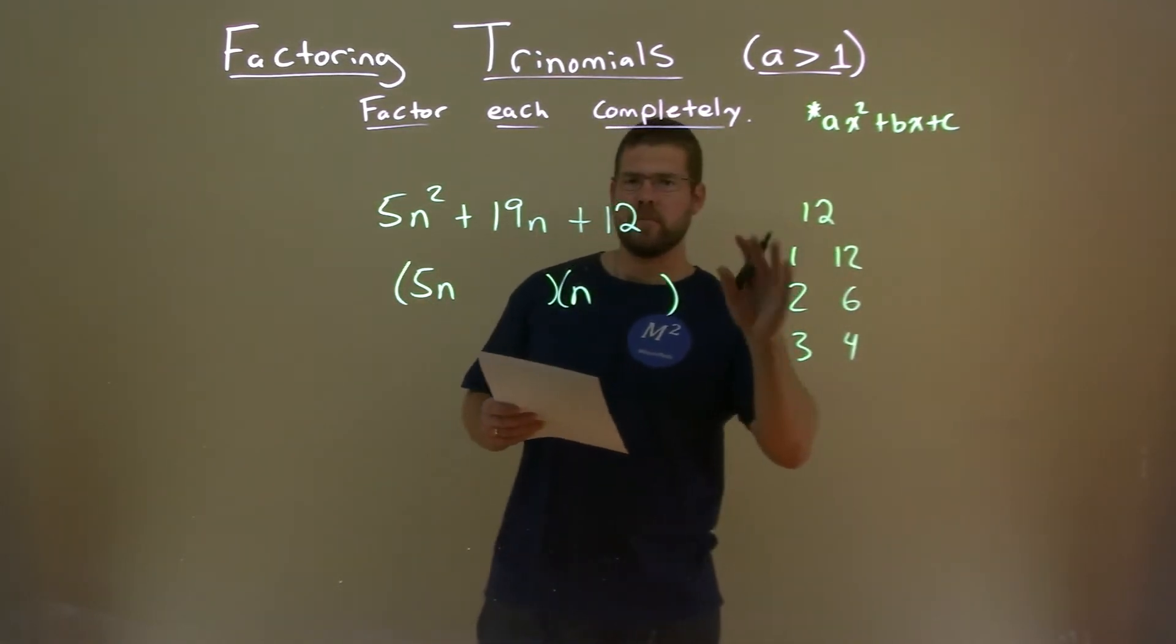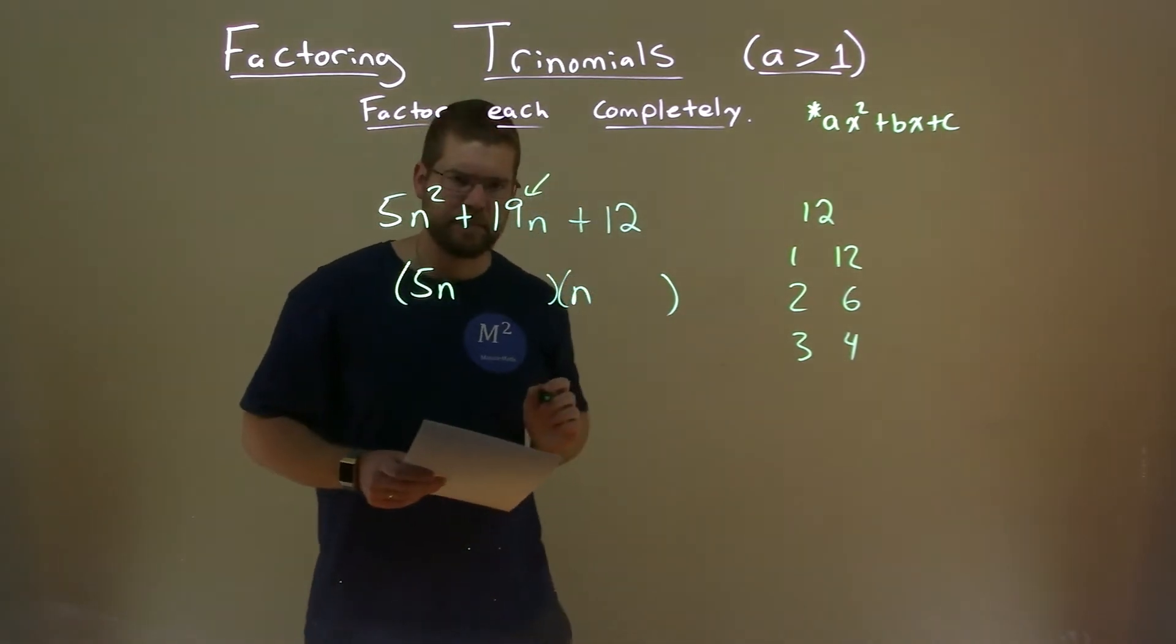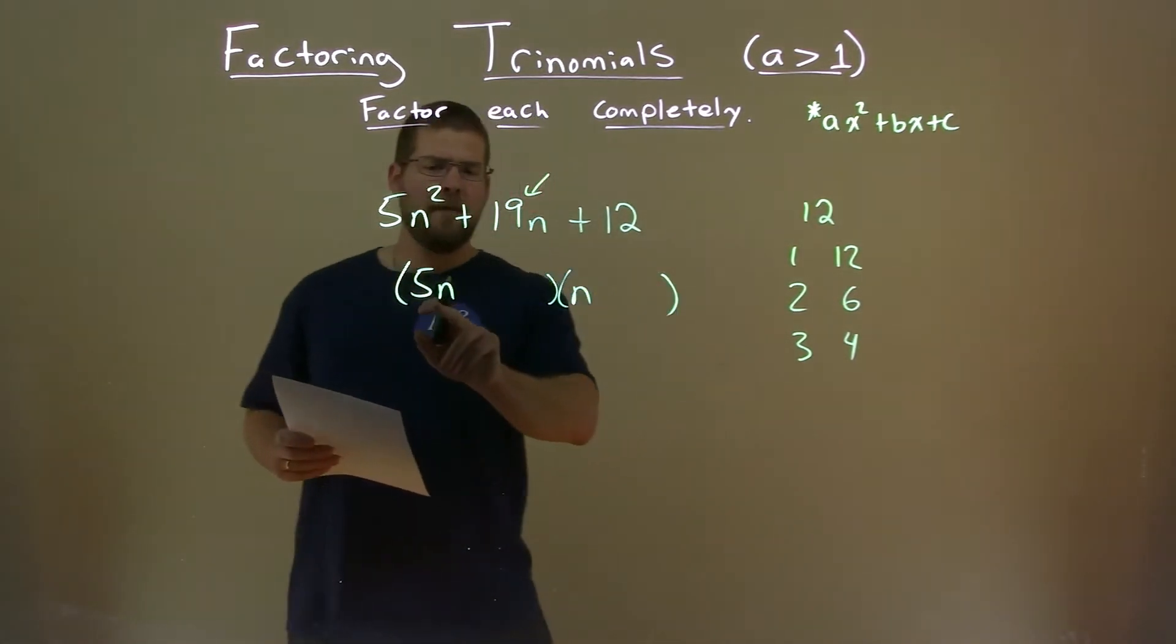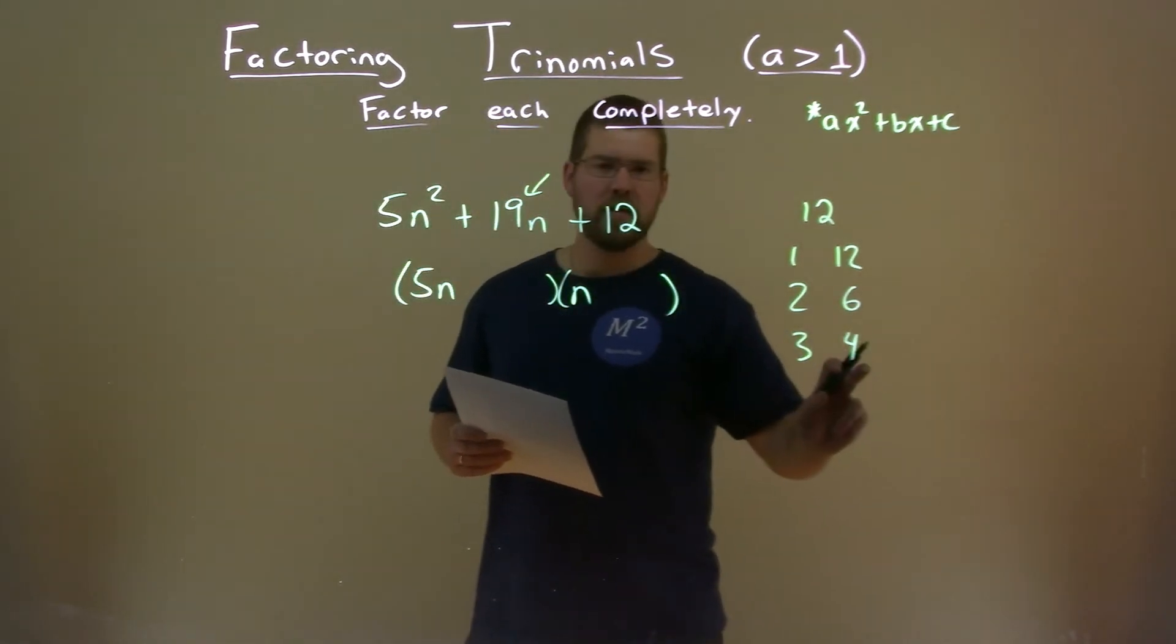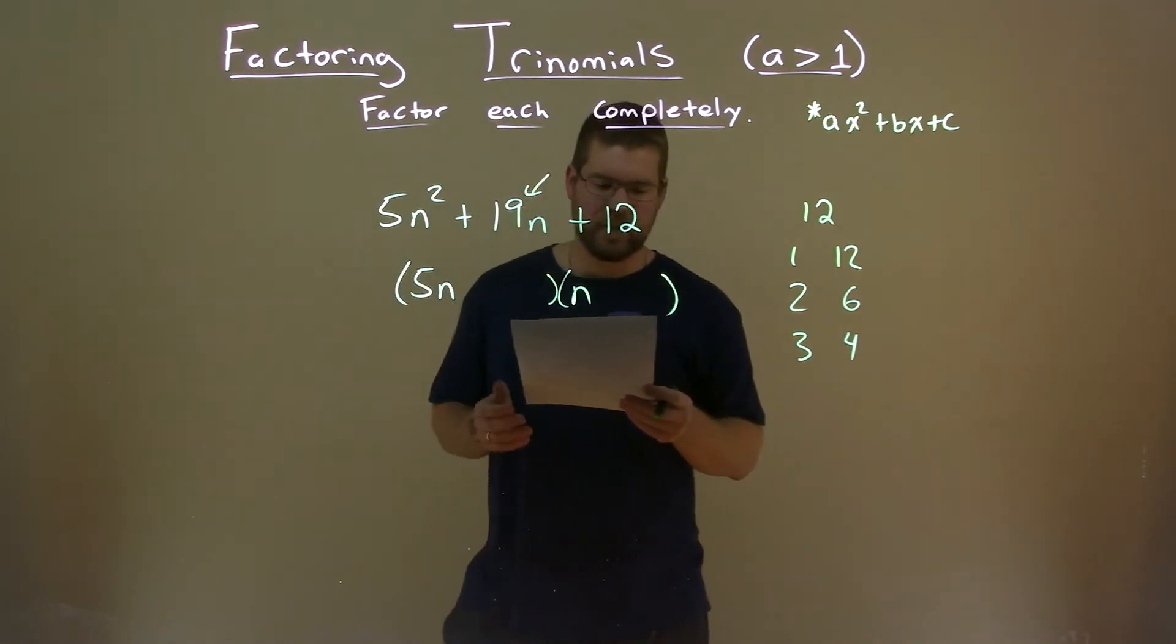Now, order doesn't really matter. It can be a flip of those. That's fine. So now we look at the b value, which is 19. We think, okay, 5 times which one of these numbers plus 1 times the other one gets me 19 here, okay?